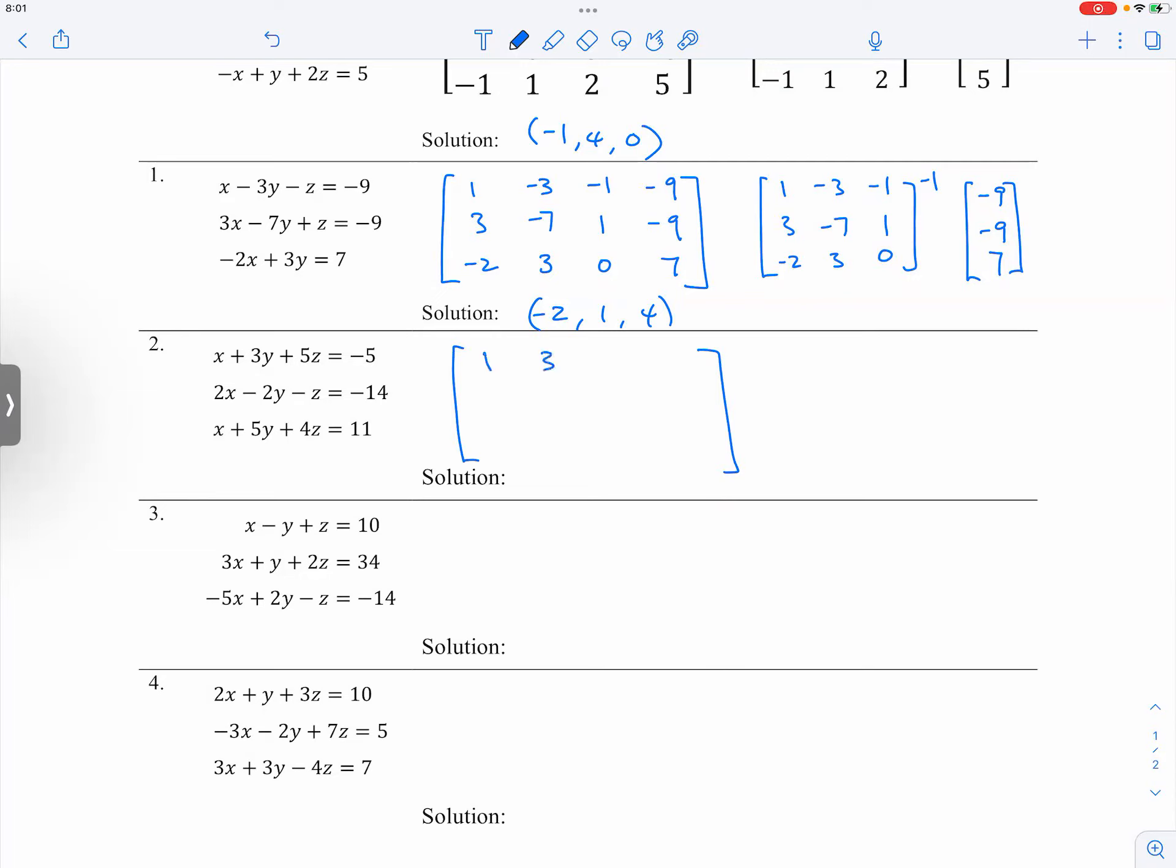So one, three, five, negative five, two, negative two, negative one, negative 14, one, five, four, 11. Okay.